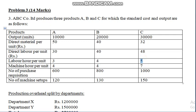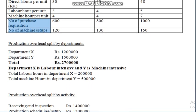Machine hours per unit: to produce product A, 4 hours are required; for product B, 4 hours; and for product C, 7 hours. Additionally, the number of purchase requisitions and the total number of machine setups were given.